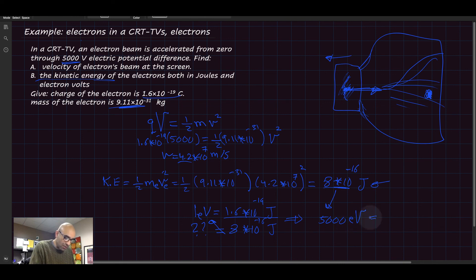You can also write it this way: 5 kilo-electron volts, or 5 keV. Kilo is 1000. And that's it for this problem. Thank you.